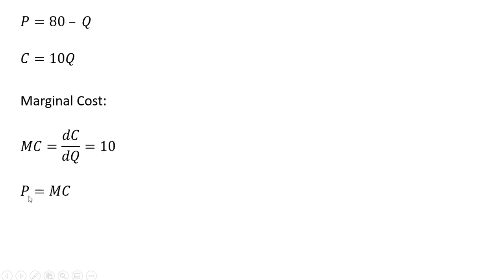Now we're going to set price equal to marginal cost. 80 minus Q equals 10 and solve for Q. Q equals 70. Plugging the 70 back into the inverse market demand, price equals marginal cost, $10.